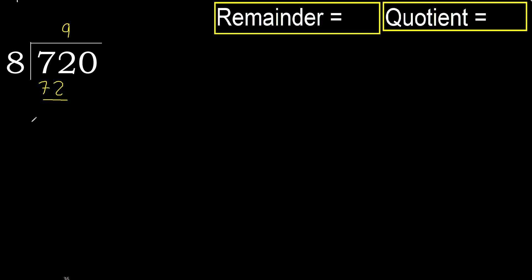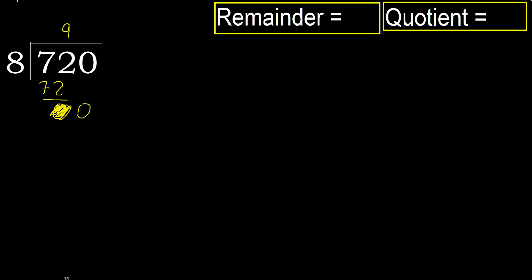72 minus 72 is 0. Next, eliminate 0 here. 0 is less, therefore next — that is no number, therefore finished. Complete with 0, because here finished with this number.